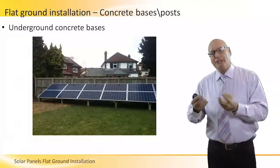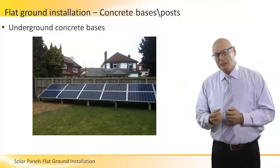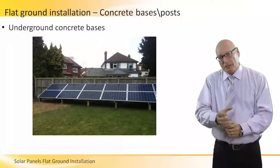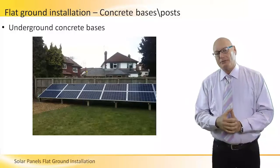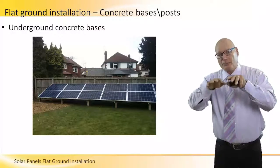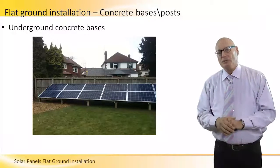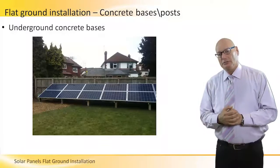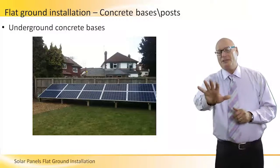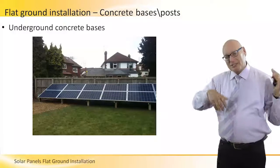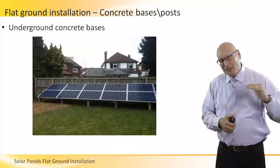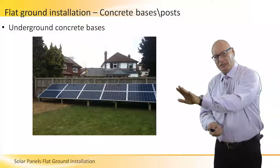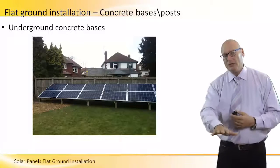Another type of flat ground installation uses a concrete basis underground in the form of cubes, with concrete posts that come up. On these concrete posts, the metallic structure lays down. Something very interesting about this technique: it allows air to flow from underneath — not only sideways through a tunnel solving the heat pocket under the array, but also wind coming from the bottom.